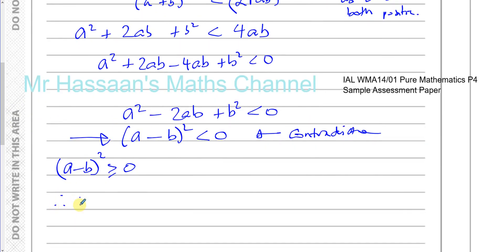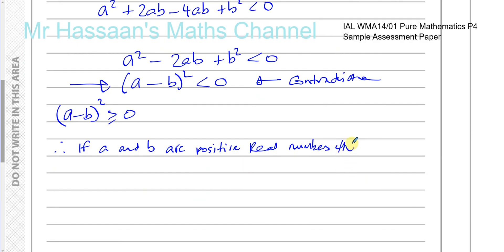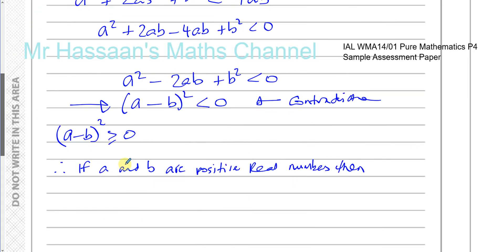Therefore, we can state: if A and B are positive real numbers, then A plus B is greater than or equal to two times the square root of AB. We've proved this by contradiction. In the end, you should write down your concluding statement.